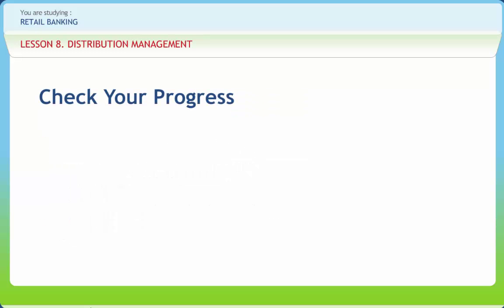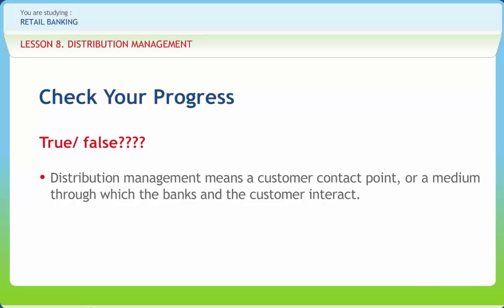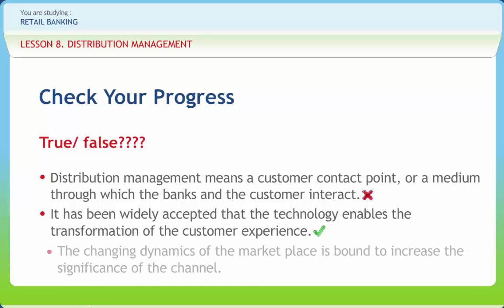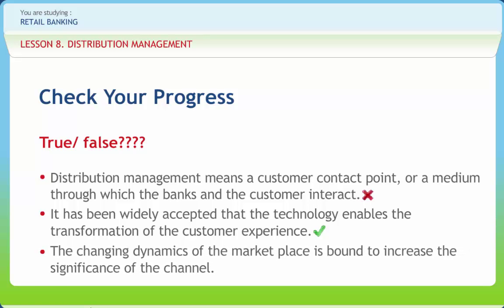Let us check if we have understood the concepts discussed in this lesson. Question: Distribution management means a customer contact point or a medium through which banks and the customer interact — Right or Wrong? Wrong! Question: It has been widely accepted that technology enables the transformation of the customer experience — Right or Wrong? Right! Question: The changing dynamics of the marketplace is bound to increase the significance of the channel — Right or Wrong? Right!